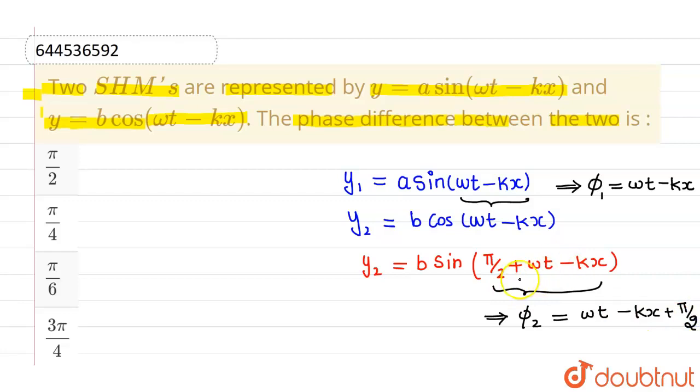For the equation, why is pi by 2 plus omega t minus kx the phase and why not omega t minus kx? Because for finding out the phase or to find out the phase difference, trigonometric ratio should be same. So if this is sin and this is cos, we have to change either of one into another. So we have changed cos into sin.